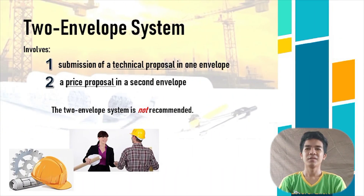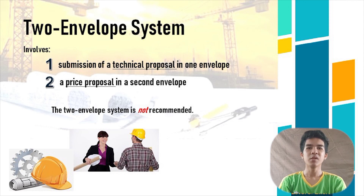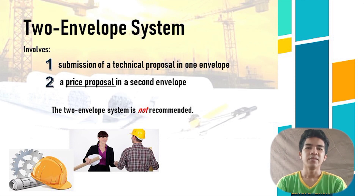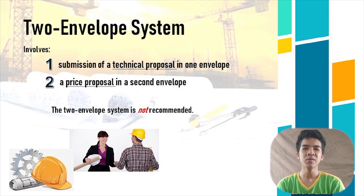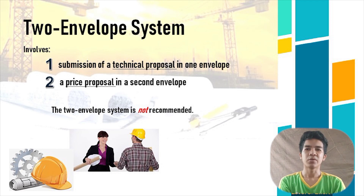The two-envelope system involves: first, the submission of a technical proposal in one envelope, and second, a price proposal in the second envelope. The two-envelope system is not recommended. If used as intended, it is similar to the recommended QBS procedure, except that the added cost to prepare a comprehensive scope and price discourages some consulting civil engineers from participating. The costs to prepare a proper price proposal are considerable to firms not selected, which increases the overall business cost of consulting civil engineering and ultimately of the clients.